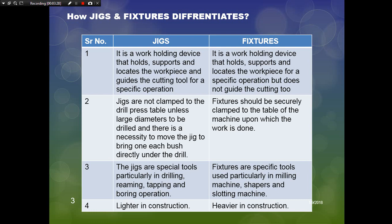Jigs are not clamped to the drill press table unless large diameters are to be drilled, and it is necessary to move the jigs to bring each bush directly under the drill. Fixtures should be securely clamped to the table of the machine upon which the work is done. Jigs are used particularly in drilling, reaming, tapping, and boring operations, whereas fixtures are used in milling machines, shapers, and slotting machines. Jigs are lighter in construction and fixtures are heavier.